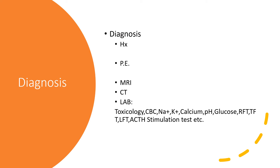How do we make the diagnosis of ODS? Take a thorough history of hyponatremia or its symptoms, history of treatment for hyponatremia that occurred two or three days before — meaning chronic hyponatremia now being treated — and whether treatment was done too fast to cause ODS. Physical examination should cover all the signs discussed. MRI is the best investigation if available. CT scan can also be done. Labs include complete blood count, sodium, potassium, calcium, pH, glucose, renal function tests, thyroid function tests, liver function tests, ACTH stimulation test, and so on.